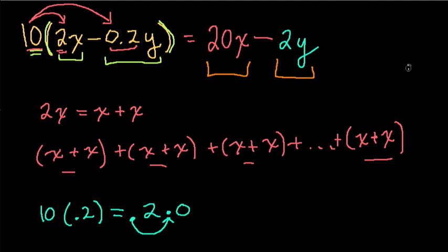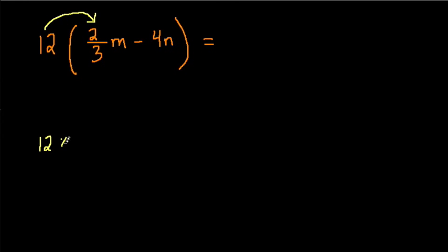Let's try another one. What if you had 12 times 2/3 m minus 4n? Very similar here. Try it on your own and resist that urge to grab a calculator. We have 12 times our first term, so we have 12 times 2/3 times m.